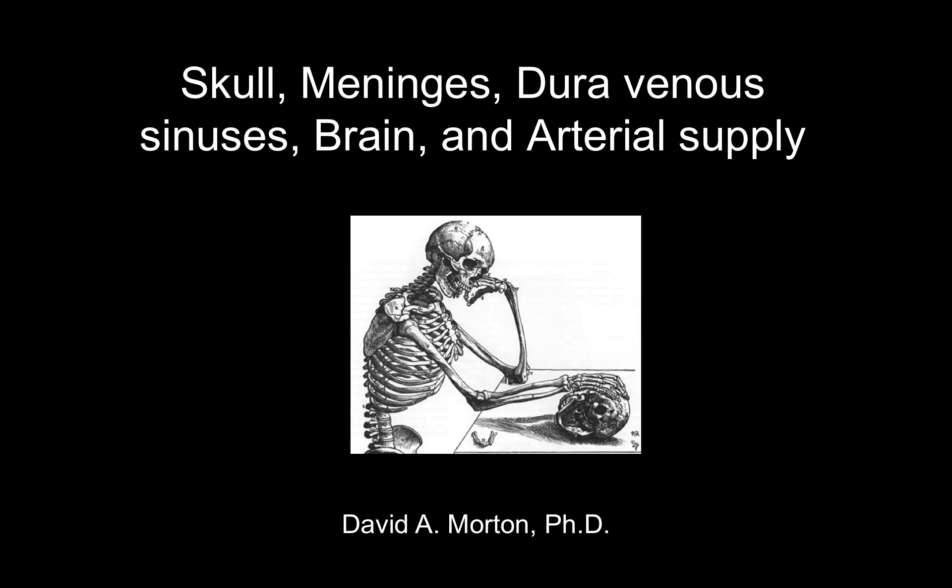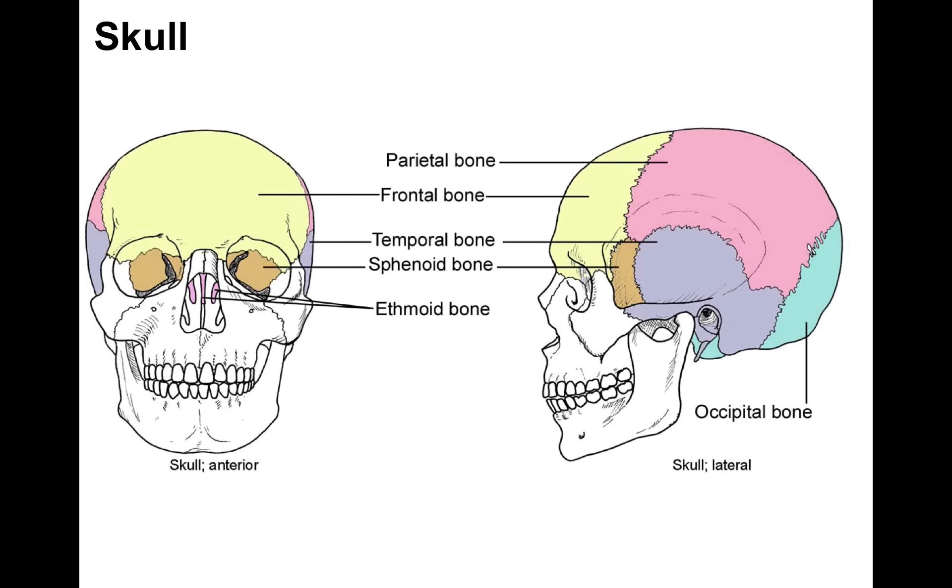Skull, meninges, dural venous sinuses, brain and arterial supply — in that order, those are the things we're going to be covering.